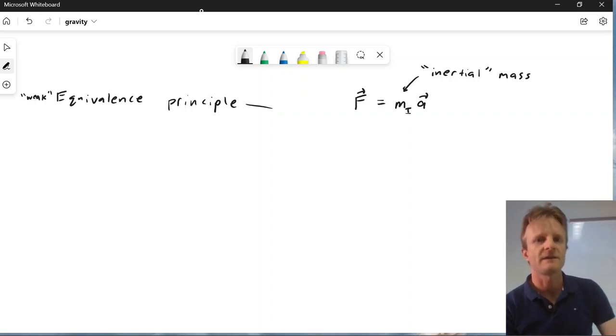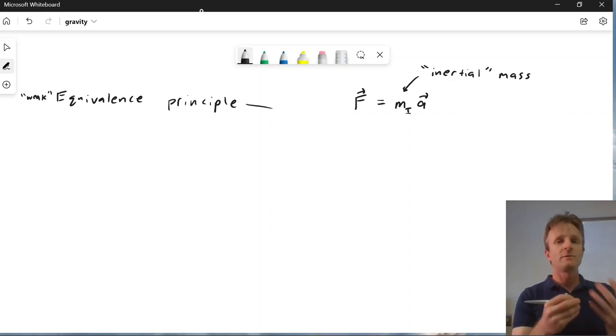So if you like, this is the mass that's defined by Newton's second law. It's observed that if you take a certain force and you act it on one body, or you take that same force and you act on a different body, the two bodies behave differently in response, and it depends on the number you can assign universally to each body, m_i.